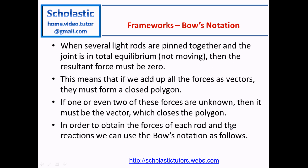Let's see the notation. Bow's notation states that when several light rods are pinned together and the joint is in equilibrium — not moving — then the resultant force must be zero. Basically, when you add all forces together, the resultant should be zero. This means that if we add up all the forces as vectors, they must form a closed polygon. If one or even two of these forces are unknown, it must be the vector which closes the polygon.